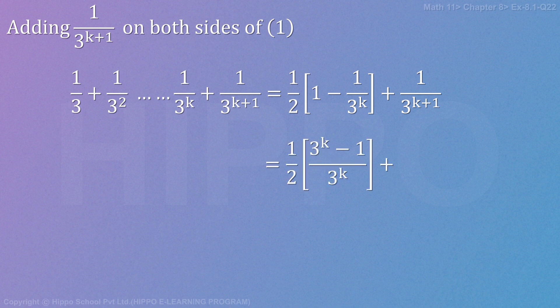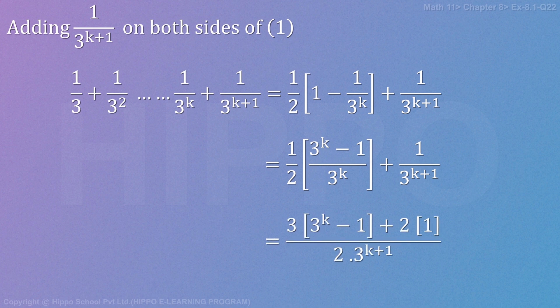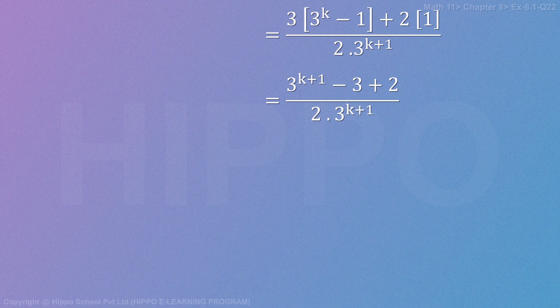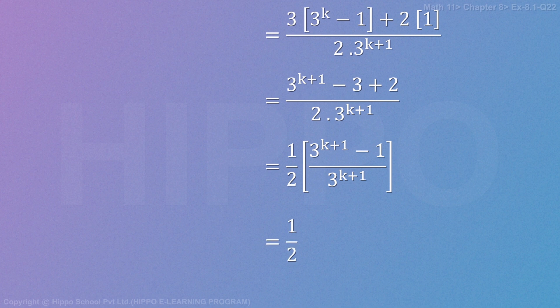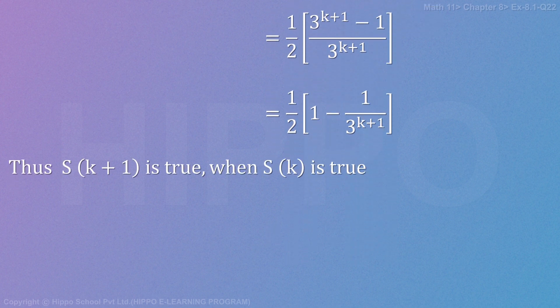Simplifying the right hand side: (1/2)[1 - (1/3)ᵏ] + (1/3)^(k+1) = (1/2)[1 - (1/3)ᵏ - (1/3)^(k+1) ... ]. After algebraic manipulation and cancellation, the expression reduces to (1/2)[1 - (1/3)^(k+1)].